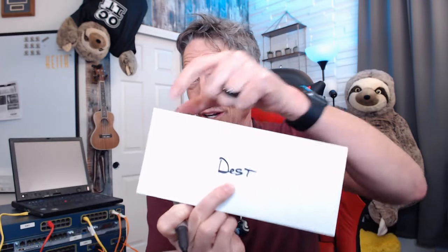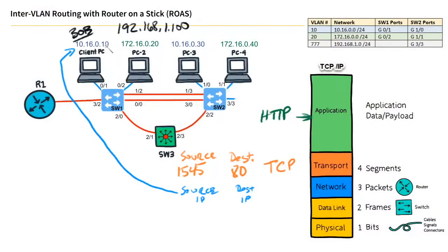In the case of Bob trying to reach the server, the source IP address is Bob's address - like a return address on a letter. We put the destination address on the letter and a source address in the upper left corner. At layer 3, the destination IP address is our server at 192.168.1.100, and the source address is Bob's address: 10.16.0.10. That information is added at layer 3 before the packet is sent.